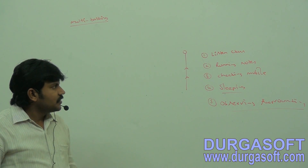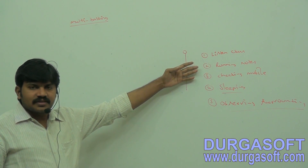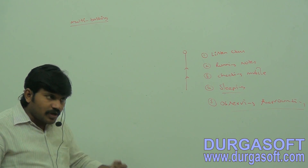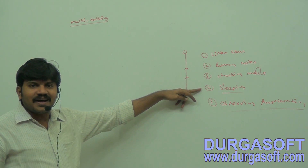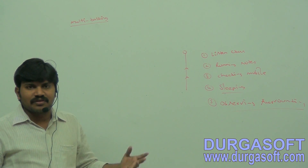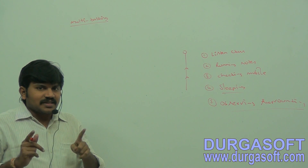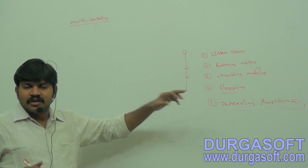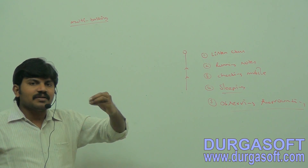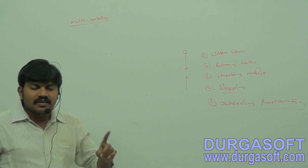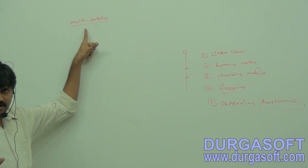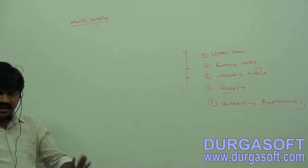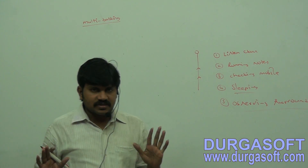So while sitting in the classroom, a student can listen to the class, take running notes, check mobile phone, check the watch, sleep, or observe the surroundings — all simultaneously. Executing several tasks simultaneously is the concept of multitasking.